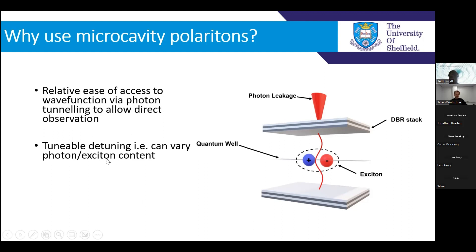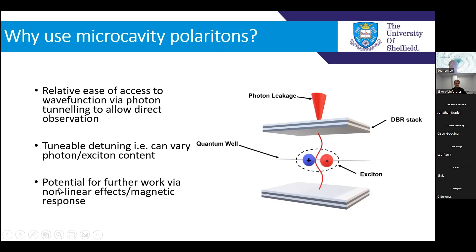If you wanted to see interparticle interactions and get a nonlinear response, you would use more excitonic polaritons. Because you can vary the exciton-photon content, it allows the potential for further work involving nonlinear effects and magnetic response — and that goes for a lot of polariton experiments as well.